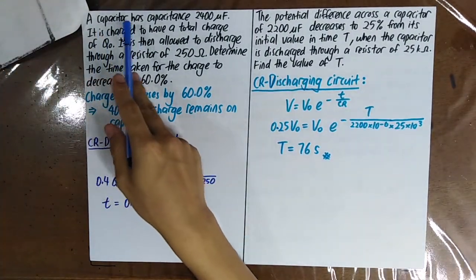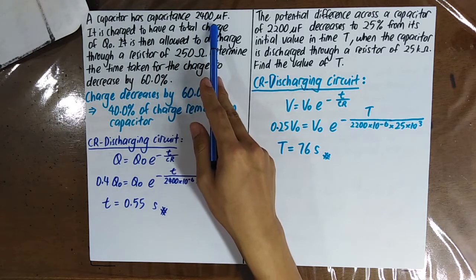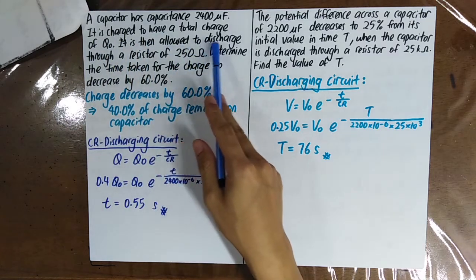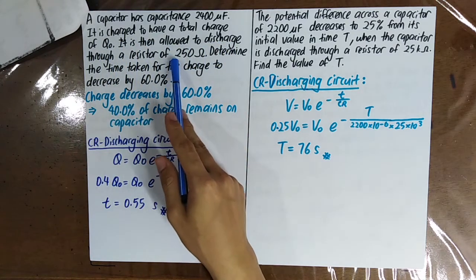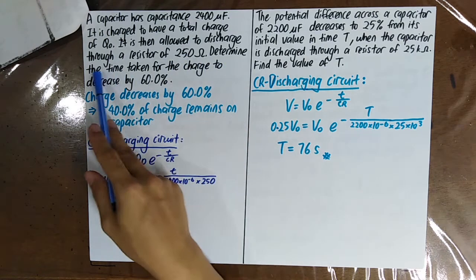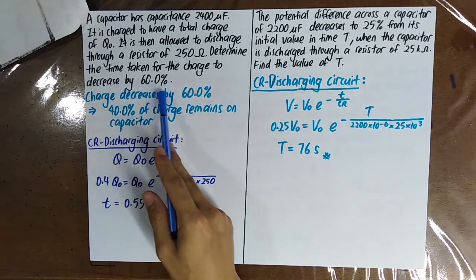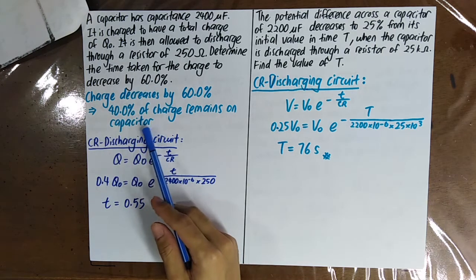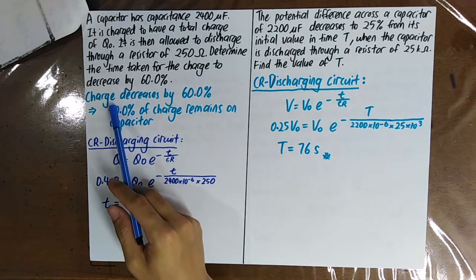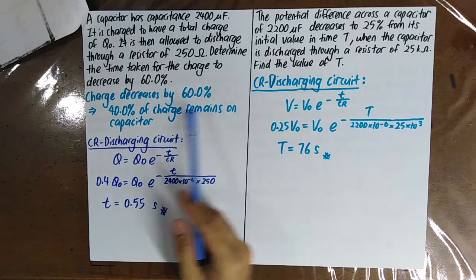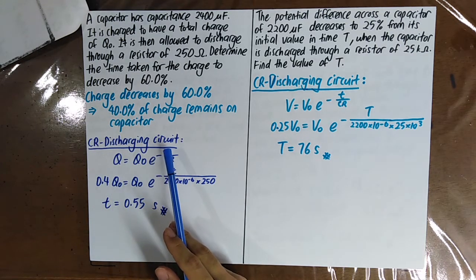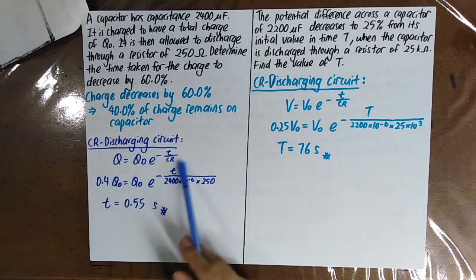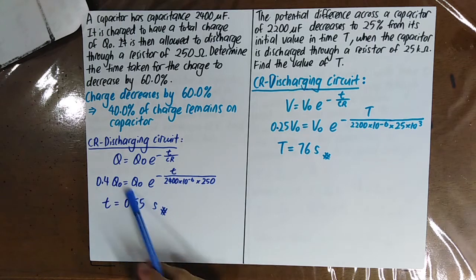A capacitor has capacitance 2400 microfarad. It is charged to a total charge of Q naught, then allowed to discharge through a resistor of 250 ohm. Determine the time taken for the charge to decrease by 60%. When the charge decreases by 60%, only 40% of the charge remains on the capacitor. Using the formula derived for the CR discharging circuit, you can find the time taken.